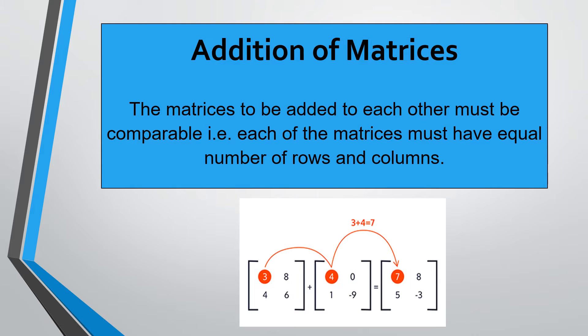Add the corresponding elements of each of the matrices and put their sums in the same order. Matrix addition is commutative, associative. It has additive identity and an additive inverse.